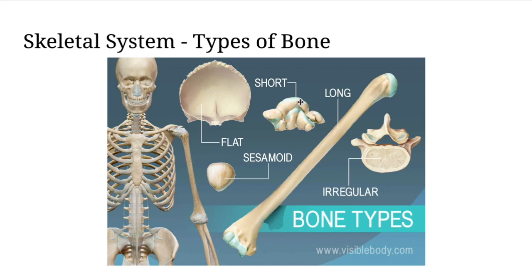Next we have short bones. Those are kind of even in length and width, so they're kind of cube-shaped almost, and we find them in compact spaces. We would have those in our wrists, which would be our carpals, and our ankles, which would be our tarsals.